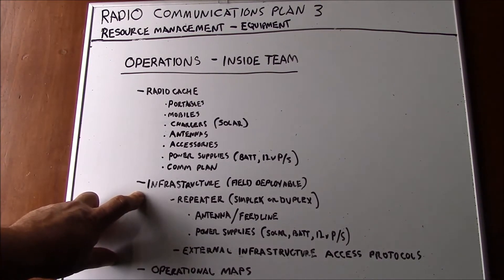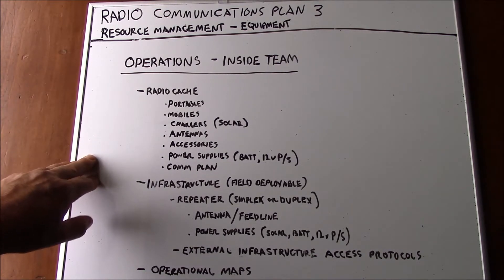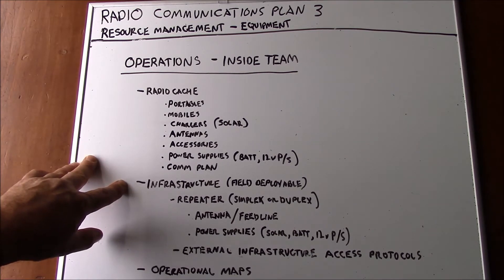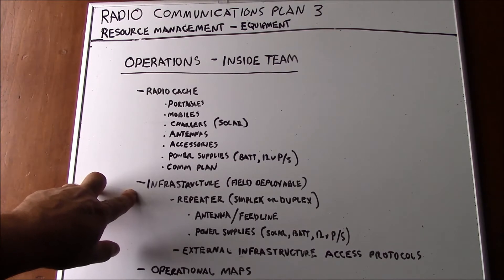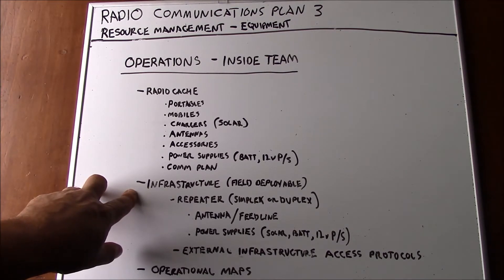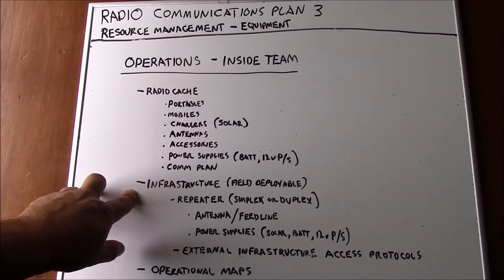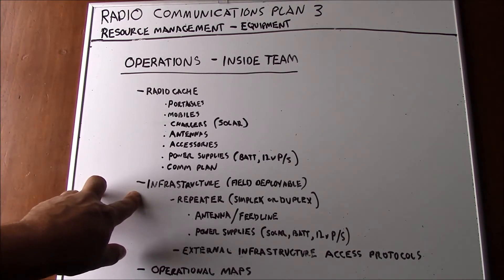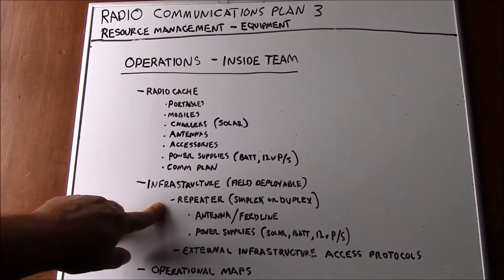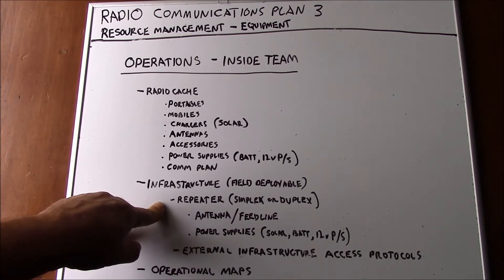When we talk about infrastructure, we're talking about field deployable infrastructure. If you're using fixed infrastructure — whether commercial, public safety, or amateur radio spectrum — you write that into your comm plan, but oftentimes you can't necessarily depend upon access to that. So we're talking about a field deployable repeater — one you can place on top of a parking garage, a building, or even in a vehicle if needed. You basically control access, operation, and location of this repeater to suit your operational needs. It can be a simplex or duplex repeater; I prefer the duplex, but a simplex repeater is fine — just be cognizant of its limitations.